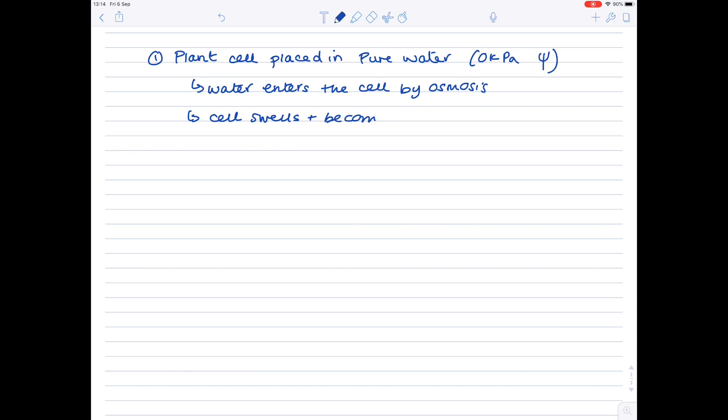The cell becomes turgid. Notice it doesn't burst. Why? Please note it doesn't burst because the cellulose cell wall offers support.